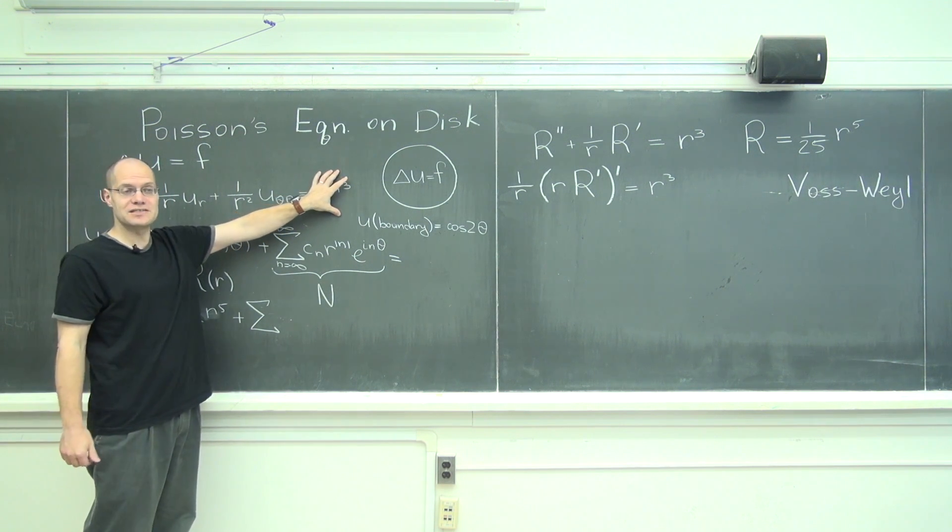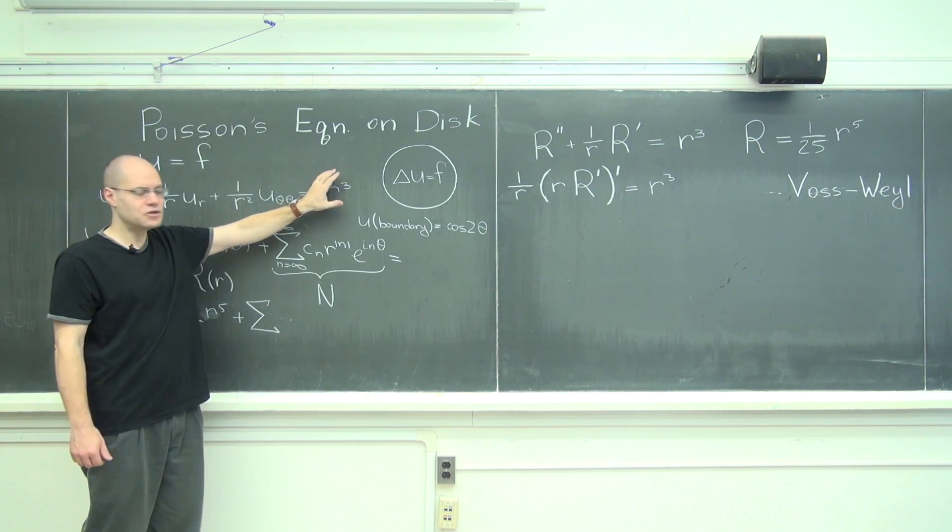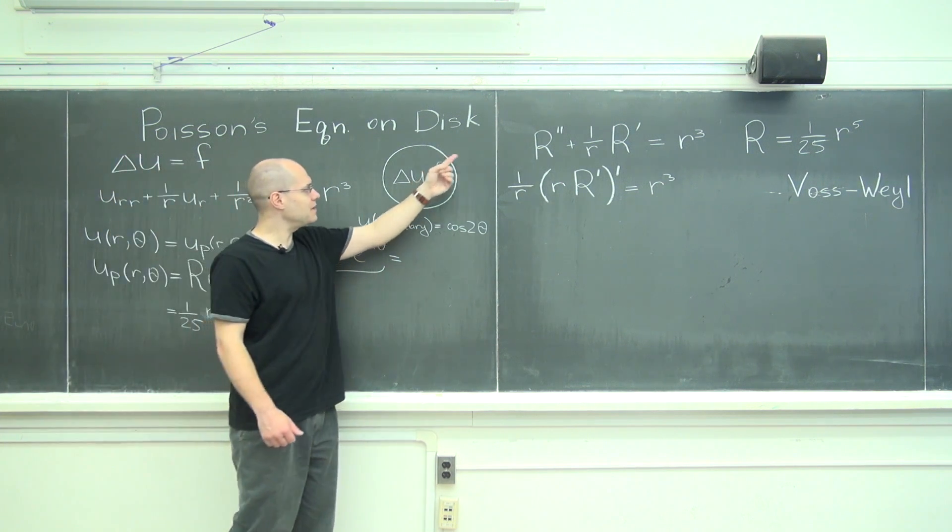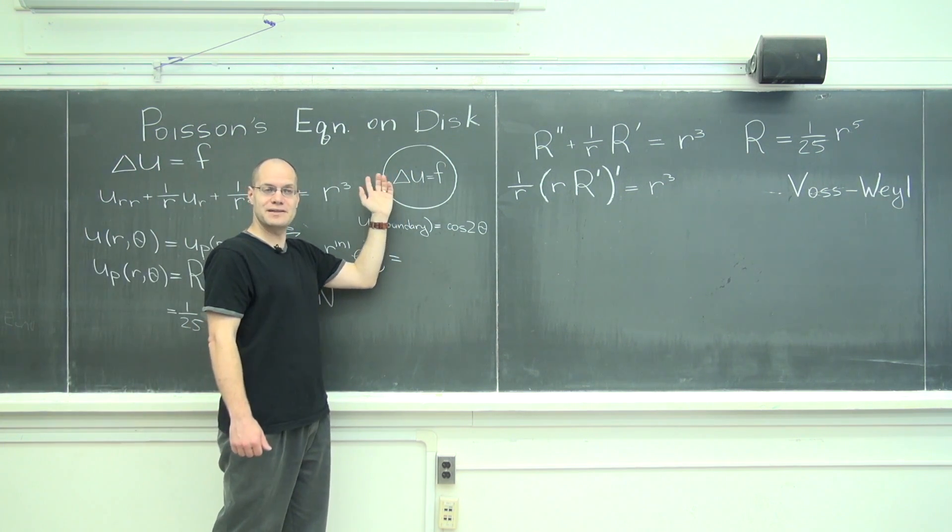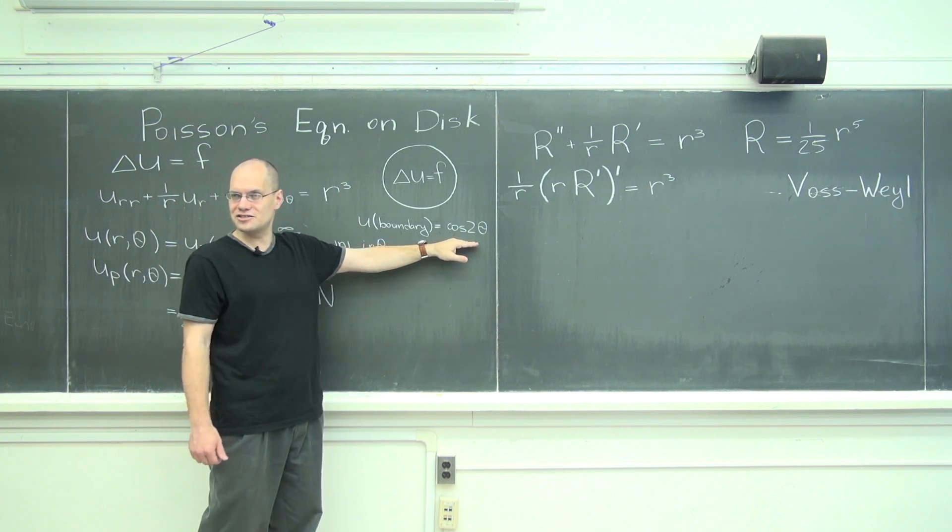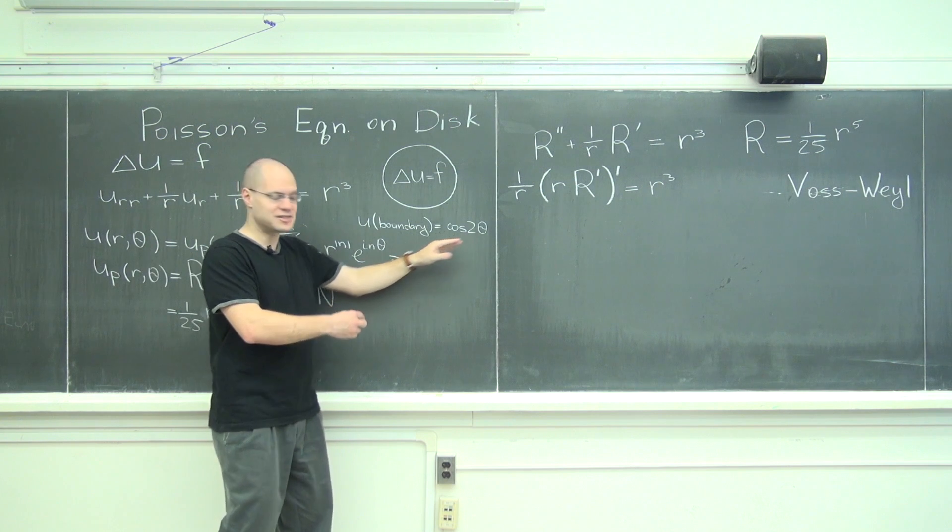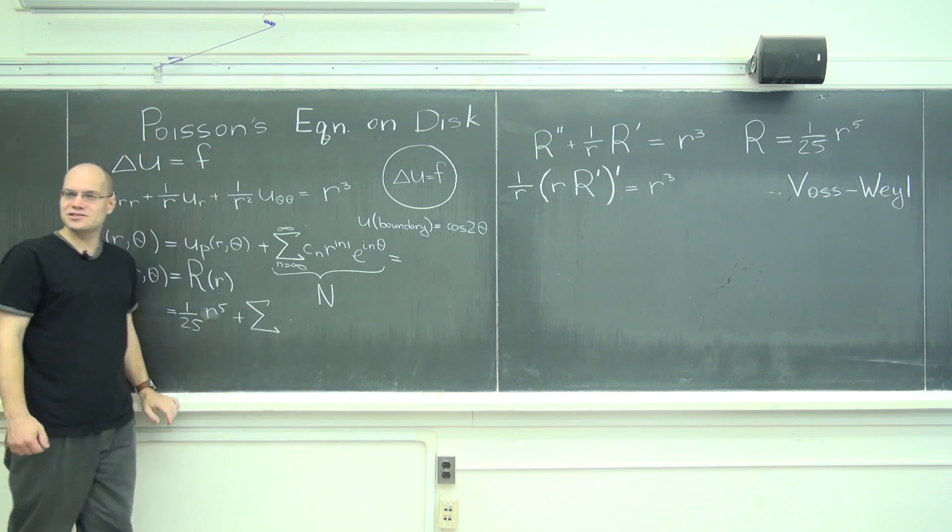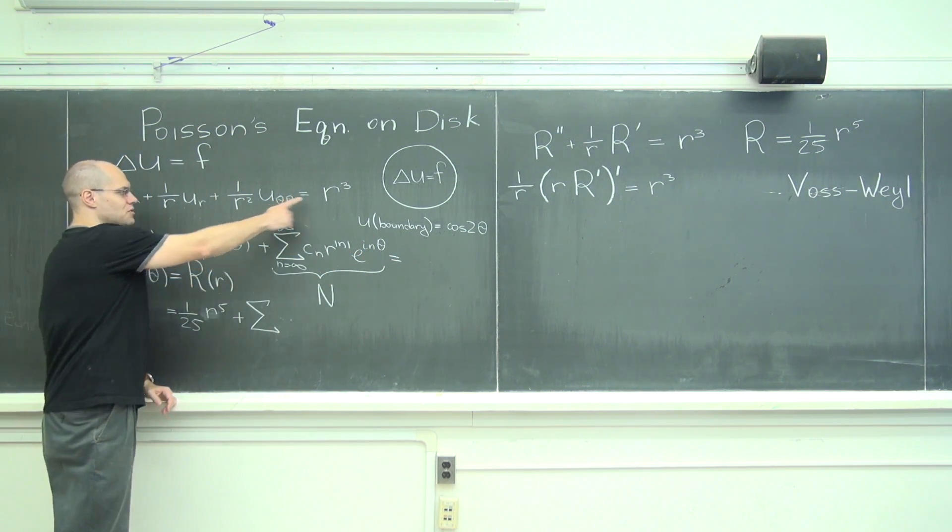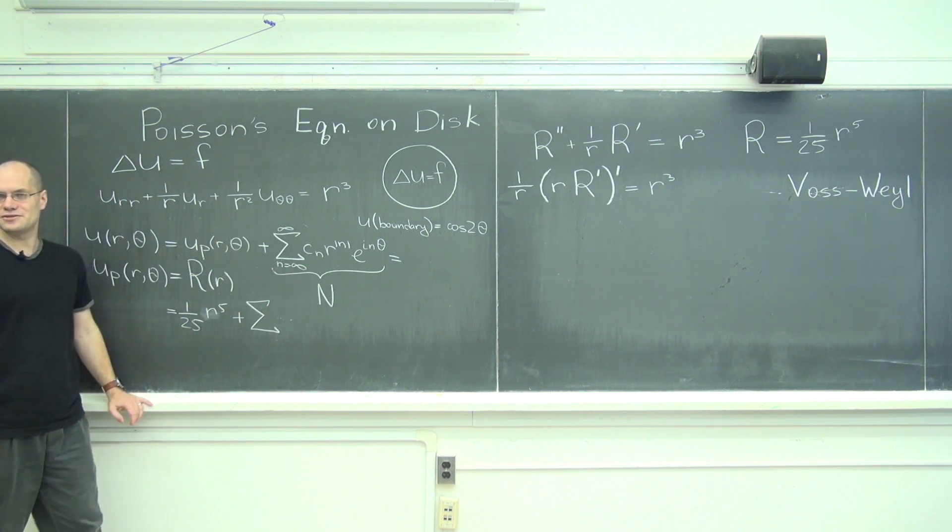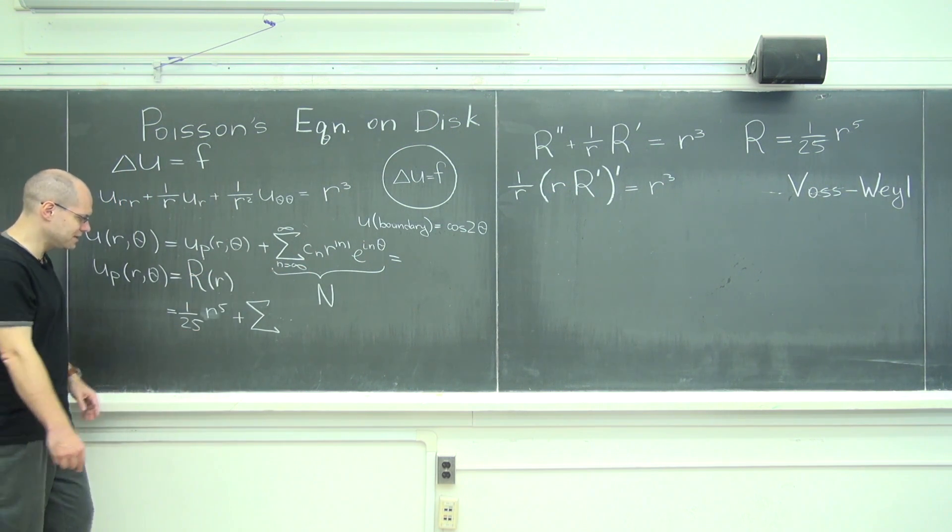So you'll find a particular solution, you'll look at its values on the boundary. It might be a complicated thing, right? But then all you need to do is just subtract it from these boundary conditions and solve Laplace's equation with these new boundary conditions. And the sum will give you exactly what you want because this will give you the right bulk condition and this will give you the right boundary condition.